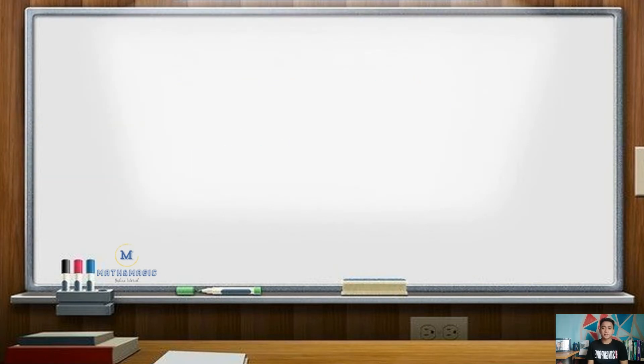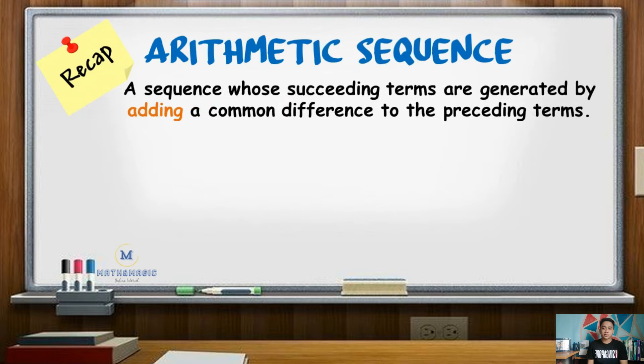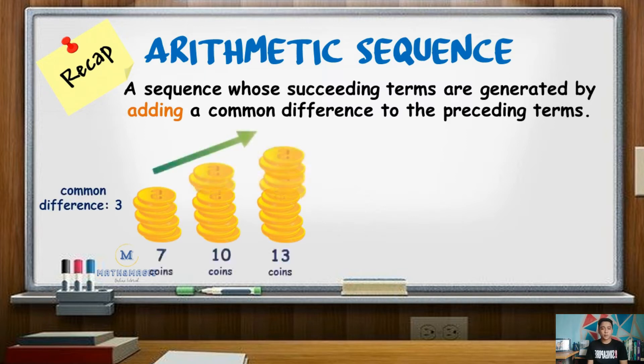Recall that in arithmetic sequence, succeeding terms are generated by adding a common difference to the preceding terms. If the common difference is positive, the sequence is said to be ascending or increasing. Meanwhile, for negative difference, the sequence is decreasing or descending.